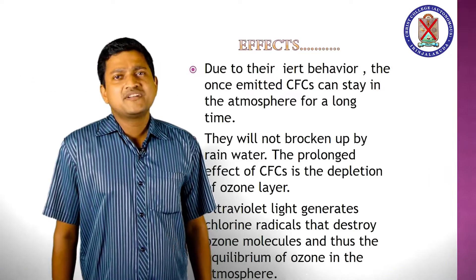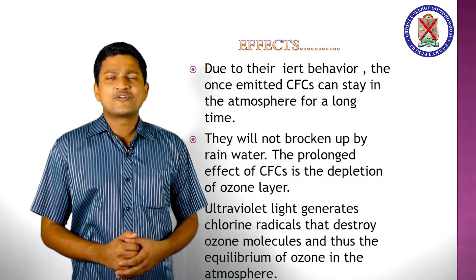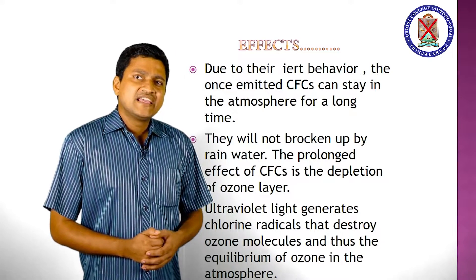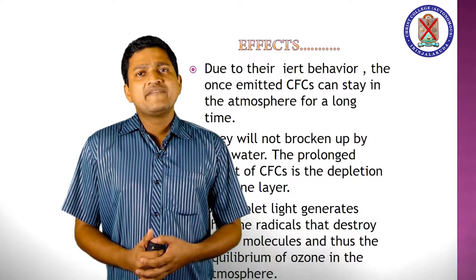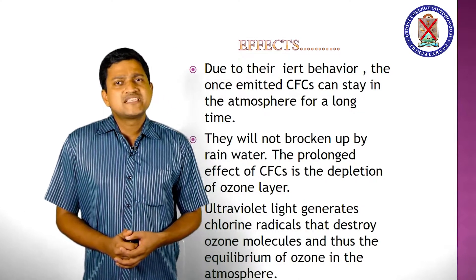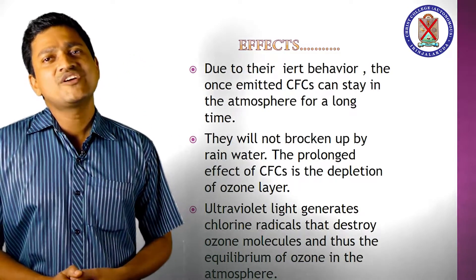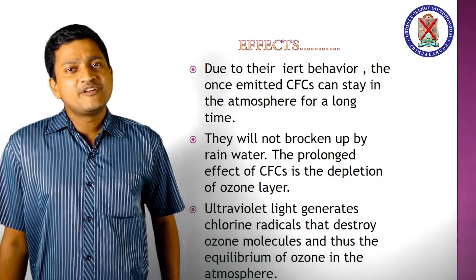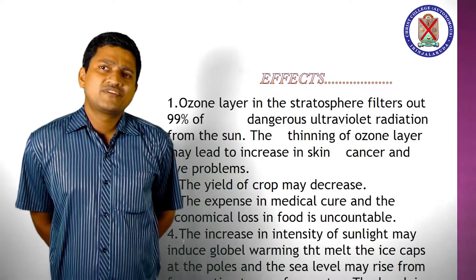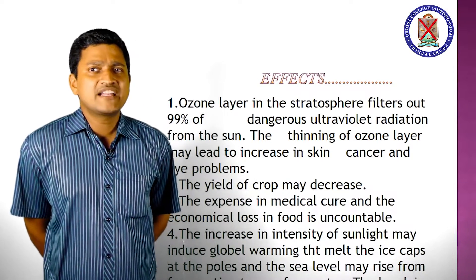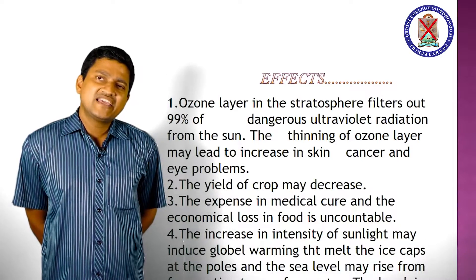Next we discuss about the effect of ozone depletion, otherwise known as formation of the ozone hole. Due to their inert behavior, once emitted, CFCs can stay in the atmosphere for a long time and will not be broken down by rainwater. The prolonged effect of CFCs is depletion of the ozone layer. Ultraviolet light generates chlorine radicals that destroy ozone molecules. The ozone layer filters about 99% of dangerous ultraviolet radiation from the sun. The thinning of the ozone layer may lead to an increase in skin cancer in human beings.